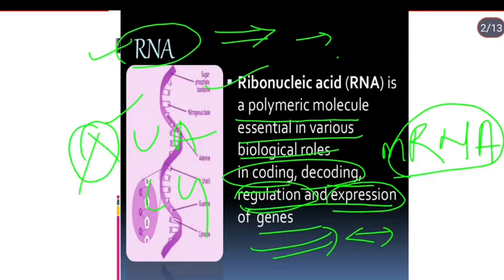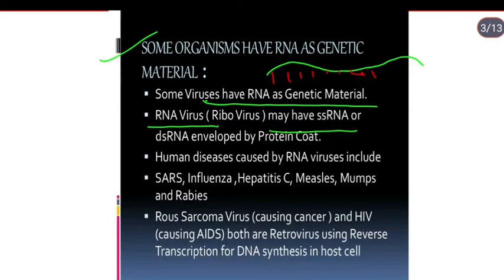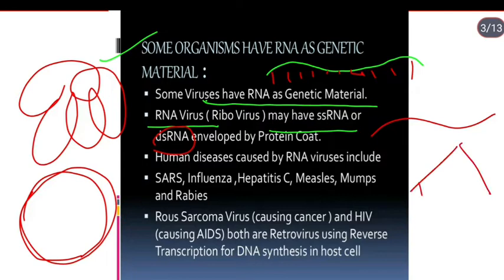Some organisms have RNA as genetic material. Some viruses have RNA as genetic material. Some may have single-strand RNA (ssRNA), while others have double-strand RNA (dsRNA). These RNA viruses can code for proteins, similar to how DNA codes for proteins.